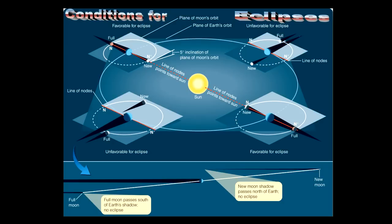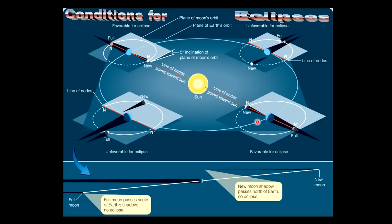Looking at the whole picture: the line of nodes is where the moon's orbital path cuts through the ecliptic plane. When this line is not lined up with the Sun, the moon can't line up well with the Sun and Earth. In a more-to-scale picture, because of that five-degree tilt, the new moon's shadow is cast way off the earth, and the moon's shadow misses entirely - so you get neither a solar nor a lunar eclipse. That happens most of the time.